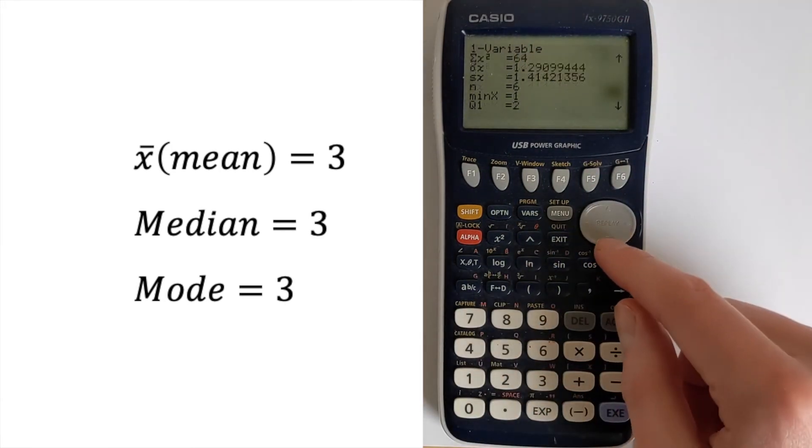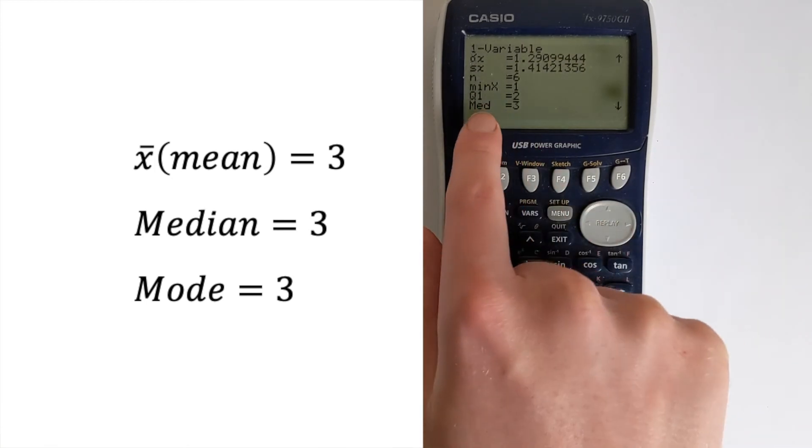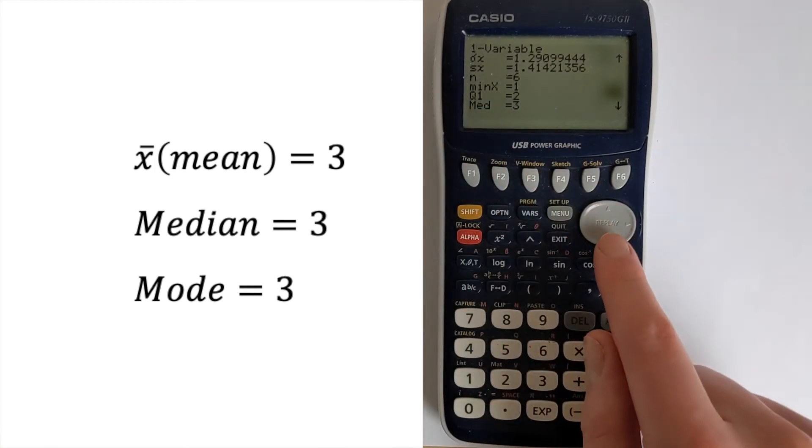Then we go down, we get the minimum, some quartiles. There's the median, which is the next one that we're interested in, which is coming out as 3.